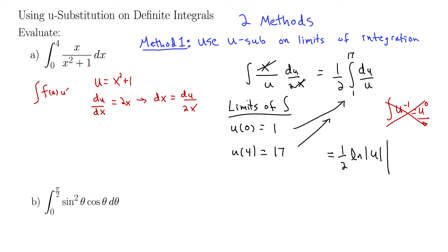So we have 1 half natural log absolute value of u, and we're evaluating this from 1 to 17. So 1 half will just hang out in the front. Natural log of 17 minus natural log of 1. Well, natural log of 1 is thankfully 0, so that simplifies things. So how about we just write this as natural log 17 over 2. Note that we don't need the plus c for definite integrals.